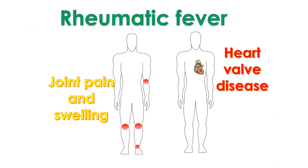The commonest cause of tricuspid stenosis is rheumatic fever, a disease which involves major limb joints and heart valves. Another disease which can cause tricuspid stenosis is carcinoid heart disease. Carcinoid heart disease is due to carcinoid disease, in which a tumour secretes certain hormones into the blood which can damage the heart valves.